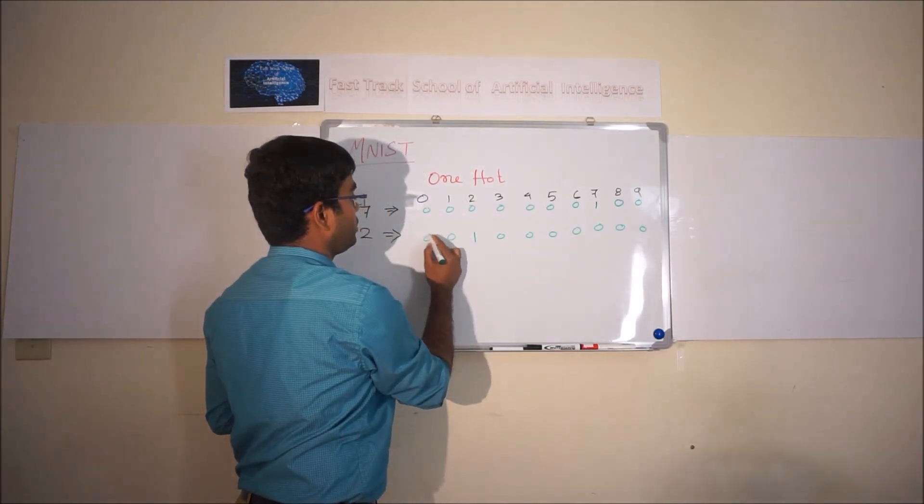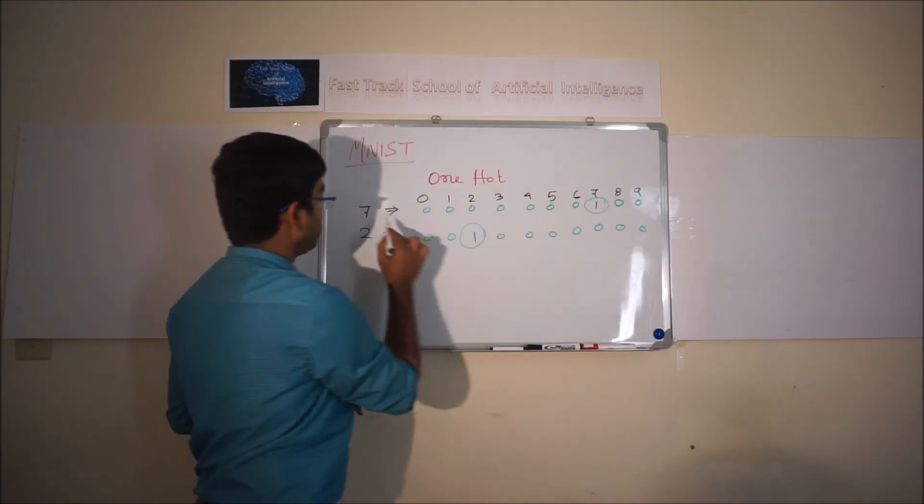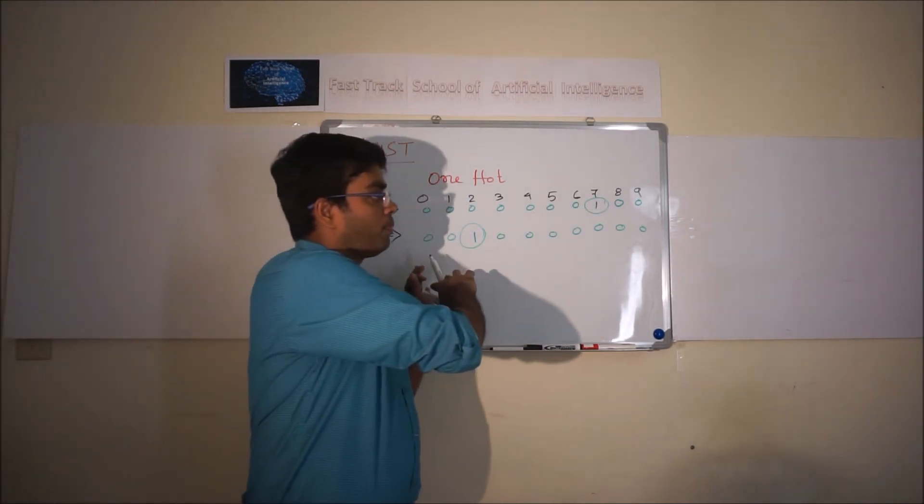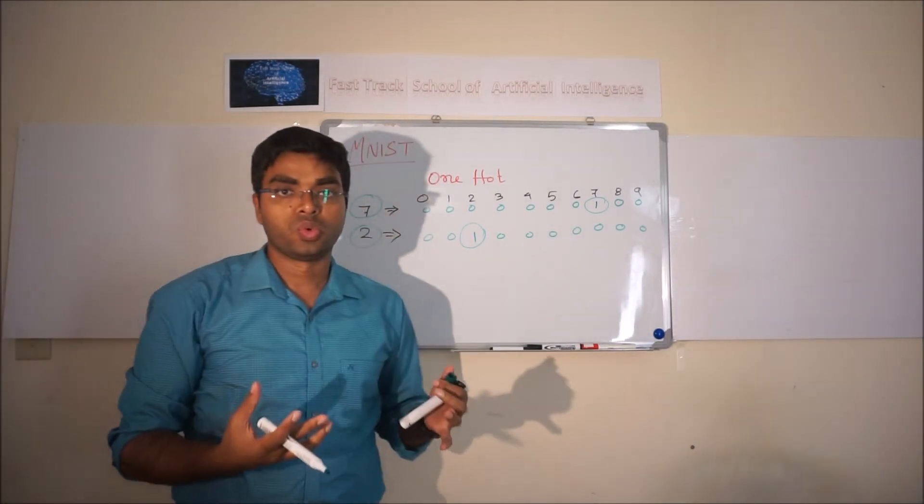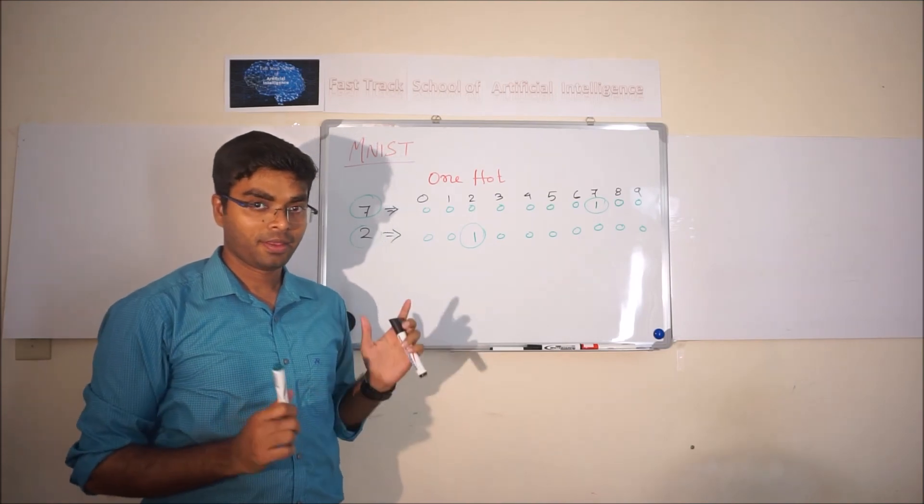This will have 1, this will have 1 for those values like this. This particular kind of encoding is known as one hot encoding. Alright.